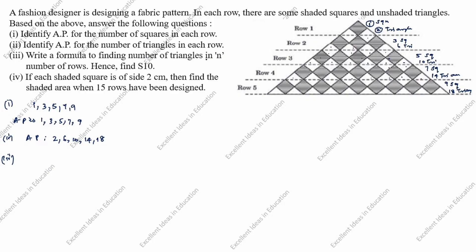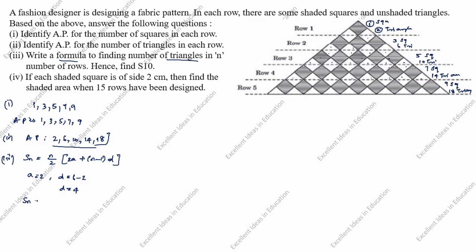Third question: write a formula to find the number of triangles in N rows and hence find S10. The formula is S_N = N/2 × (2A + (N−1)D). For the triangle AP, A = 2 and D = 6 − 2 = 4.